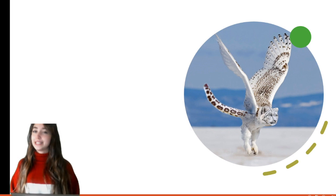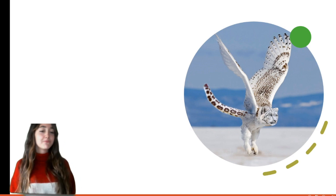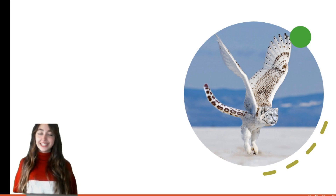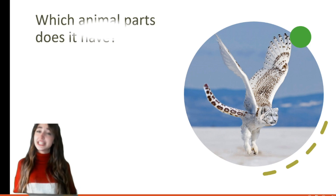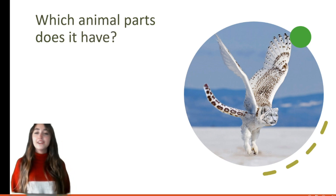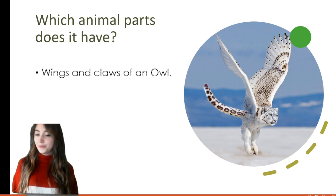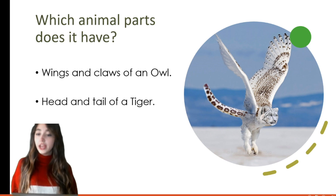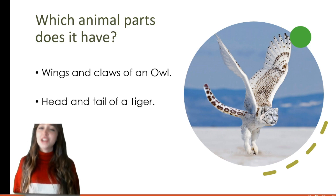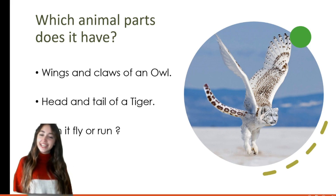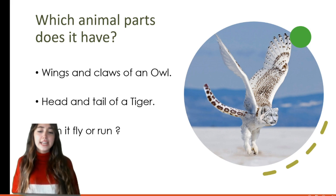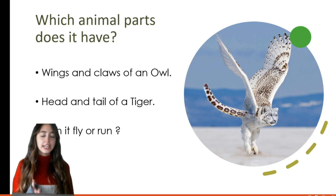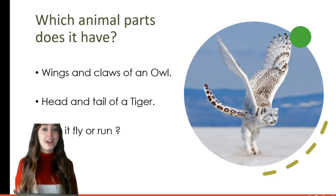Which two animals are mixed up in the picture? Yes — a tiger and an owl! Because it has wings like an owl. Which animal parts does it have? It has the wings and claws of an owl, and the head and tail of a tiger. Can it fly or run? I think it can both fly and run — but who knows?